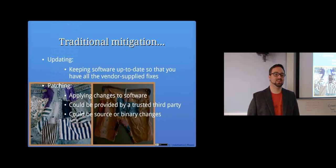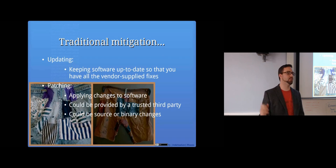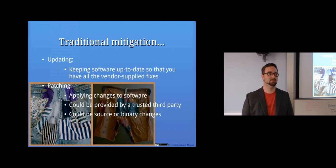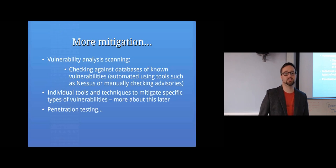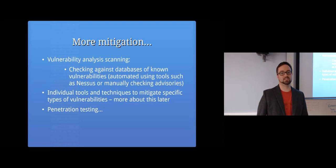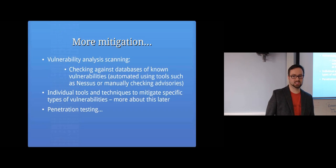Traditional mitigation involves keeping software up to date with patches — either from the vendor or third parties — applied to source code or binary. You can also do vulnerability scanning using automated tools against your own servers to find known vulnerabilities, and use specific tools to protect against certain attack types.